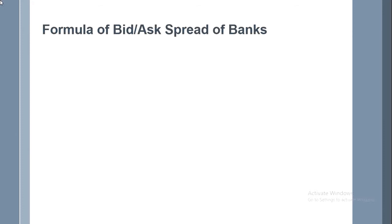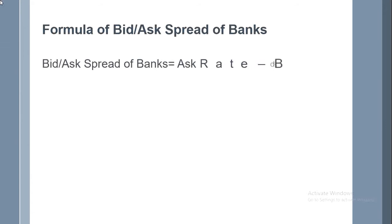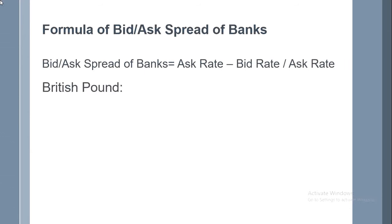The bid-ask rate basically means the gap between the ask rate and the bid rate. The formula is: ask rate minus bid rate, divided by ask rate.